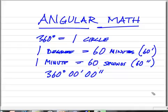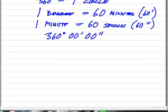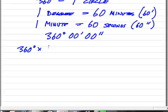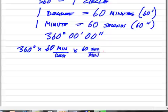Well, how many seconds is that really? We can determine that pretty quickly. We're going to simply multiply 360 degrees by 60 minutes per degree, and then multiply that by 60 seconds per minute. And you can see that some units will cancel, won't they?